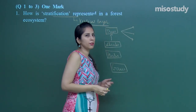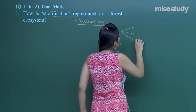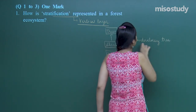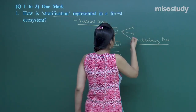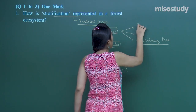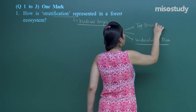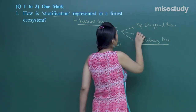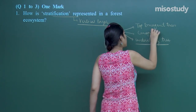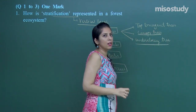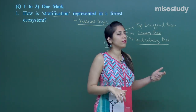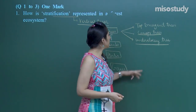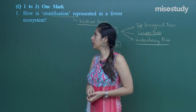Towards the lower side, near the shrub height, we have understory trees. Above that we have the top emergent trees. In between are the canopy trees, which look like an umbrella over the forest. Because of the canopy trees, if you are flying on a plane you cannot see the herbs, shrubs, and grasses below. This is called vertical stratification.